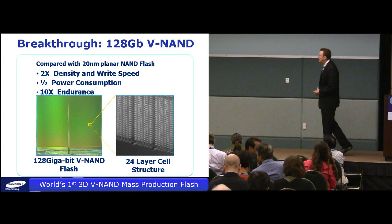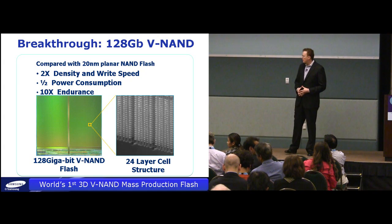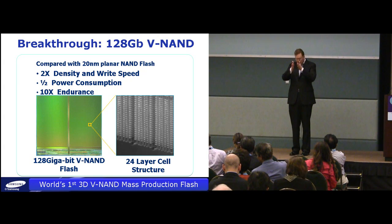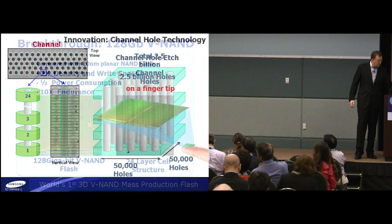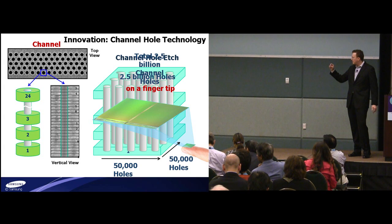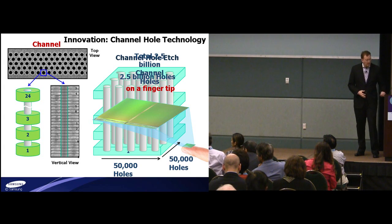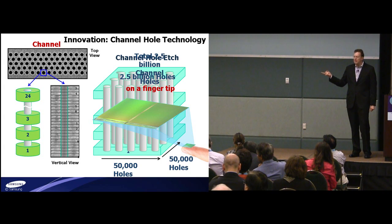Vertical NAND technology moves from 2D planar scaling to three-dimensional scaling. It gets twice the density and write speed, half the power consumption, and 10 times the endurance. The way it does this is by drilling exceptionally long holes and stacking the dies on top of each other. There are tiny little channels drilled into the silicon, which is stacked on top of each other — giving you about 50,000 by 50,000 holes, or about two and a half billion holes on something the size of my finger.